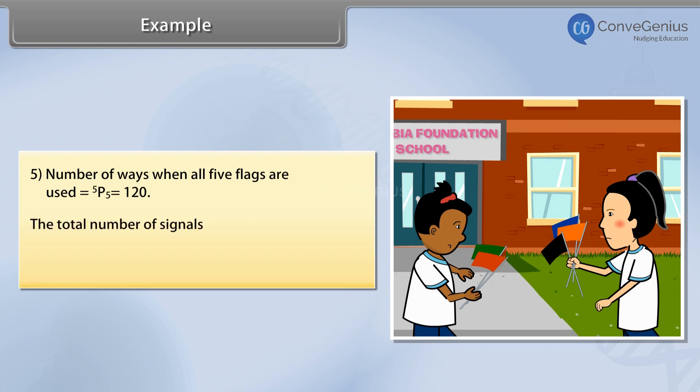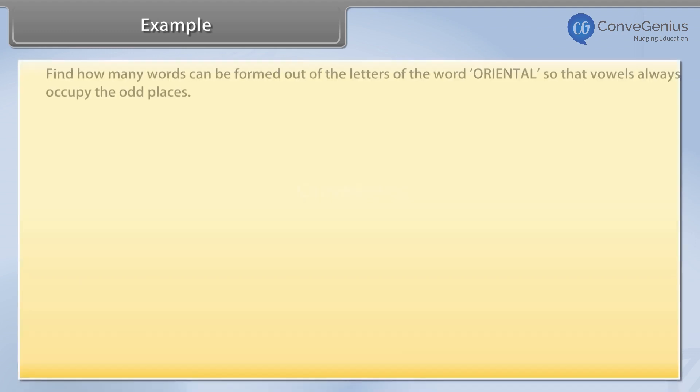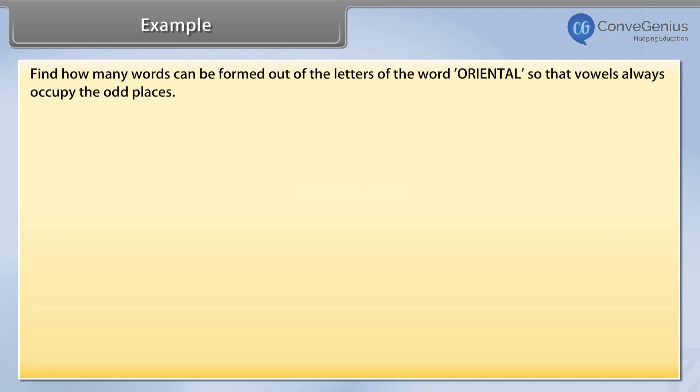The total number of signals is equal to 5 + 20 + 60 + 120 + 120 = 325. Find how many words can be formed out of the letters of the word ORIENTAL so that vowels always occupy the odd places.